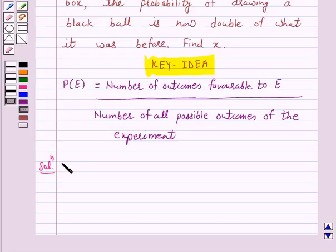So the number of possible outcomes is equal to 12.